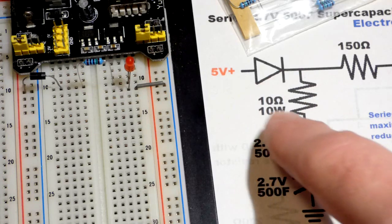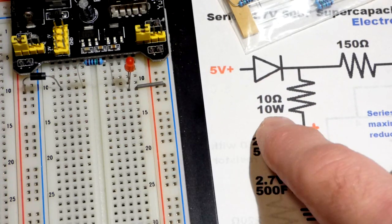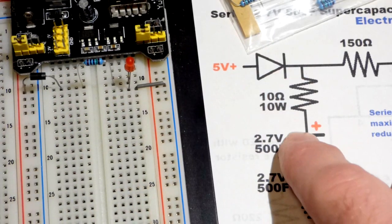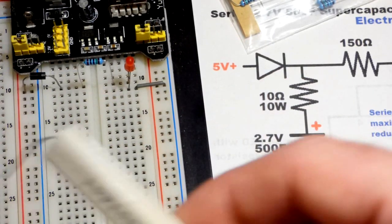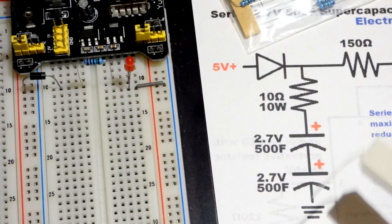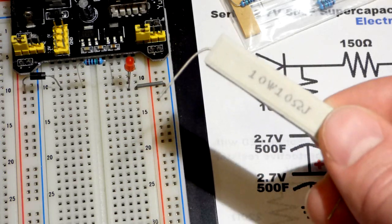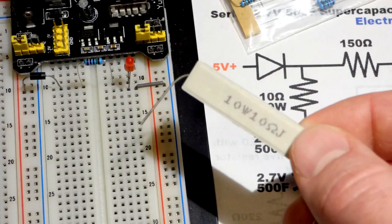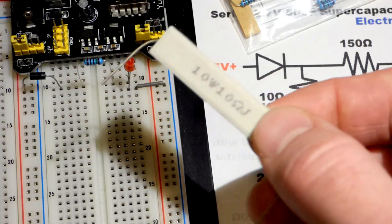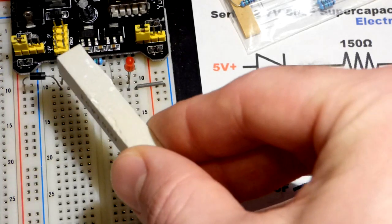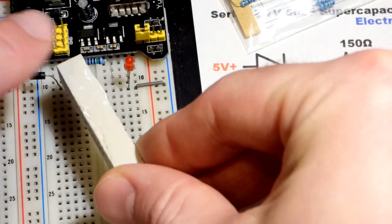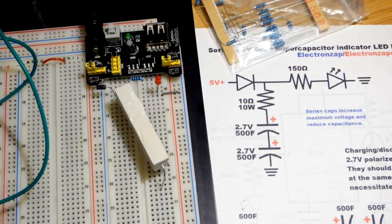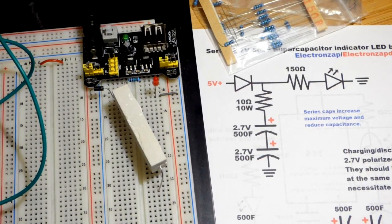So we're going to take a 10 ohm resistor. That's going to be a lot of power so I have these 10 watt resistors. You want to use a high wattage resistor for this, and generally for supercapacitors any resistors you use are going to have to be high wattage because they're intended for high amounts of current. Probably a good idea to pick these up if you want to do a lot of testing with supercapacitors.